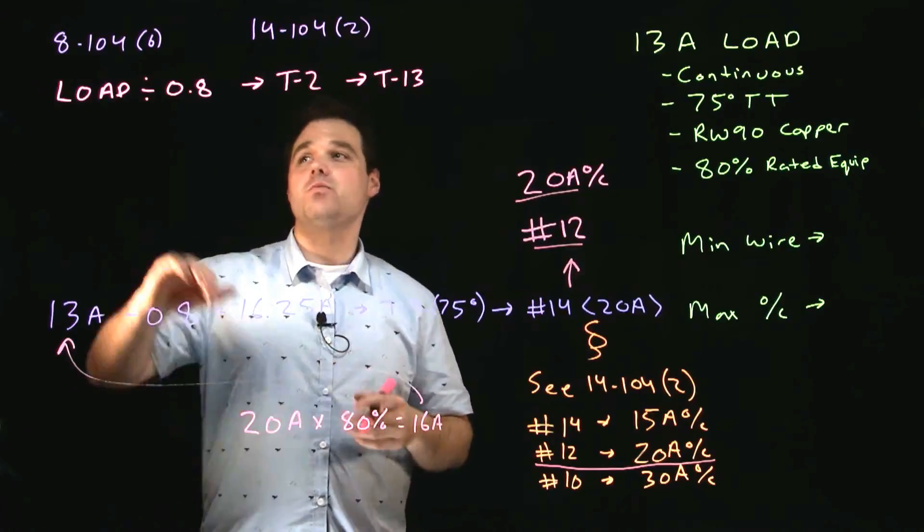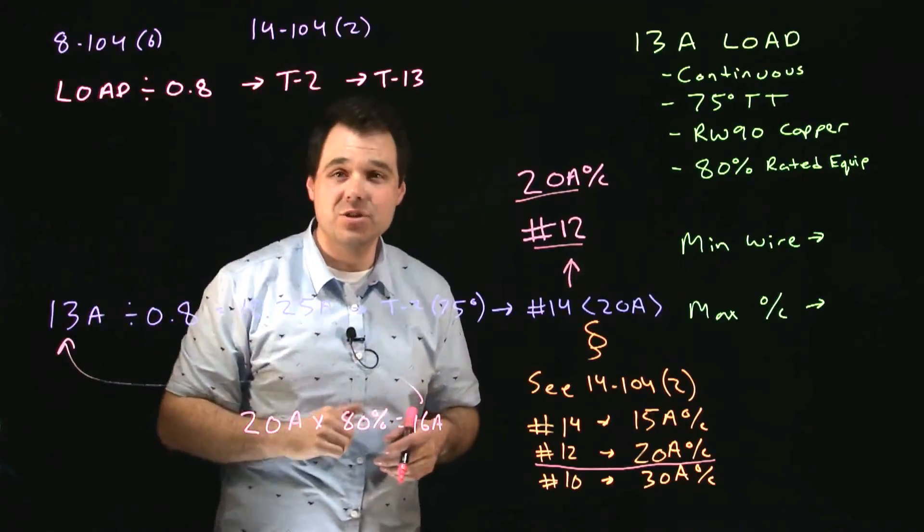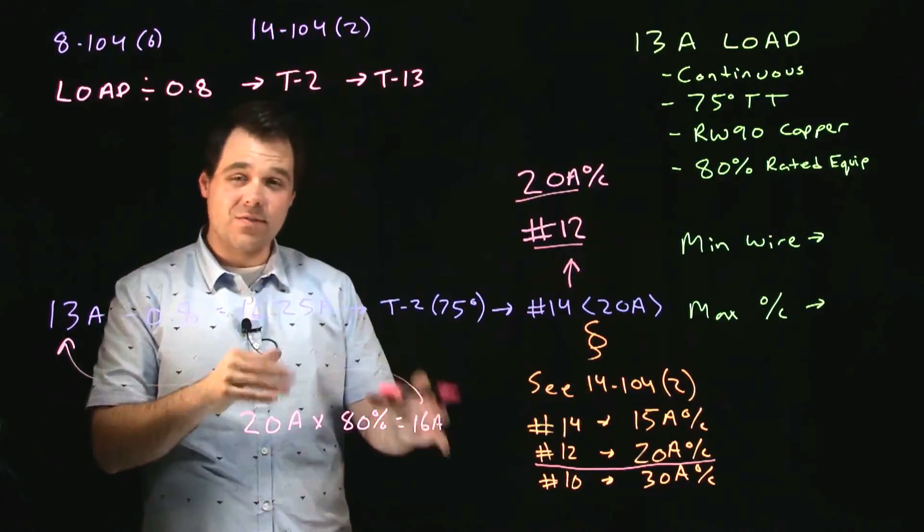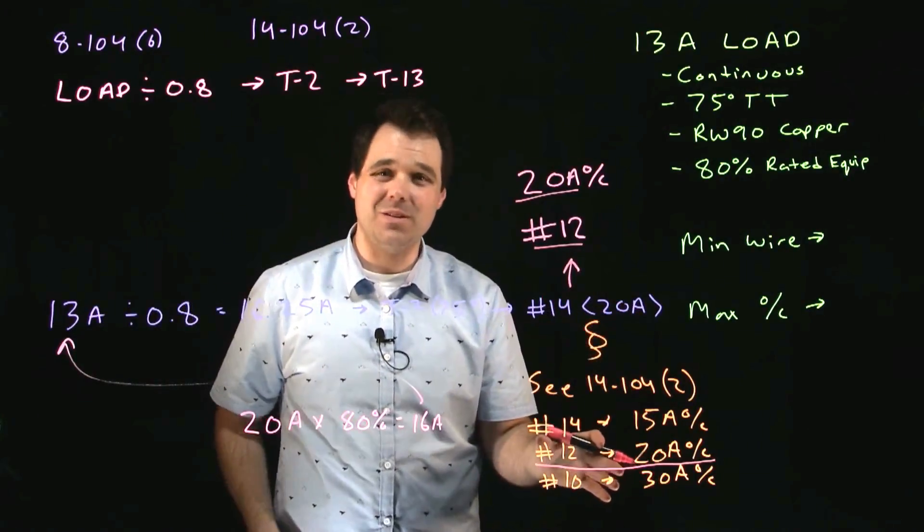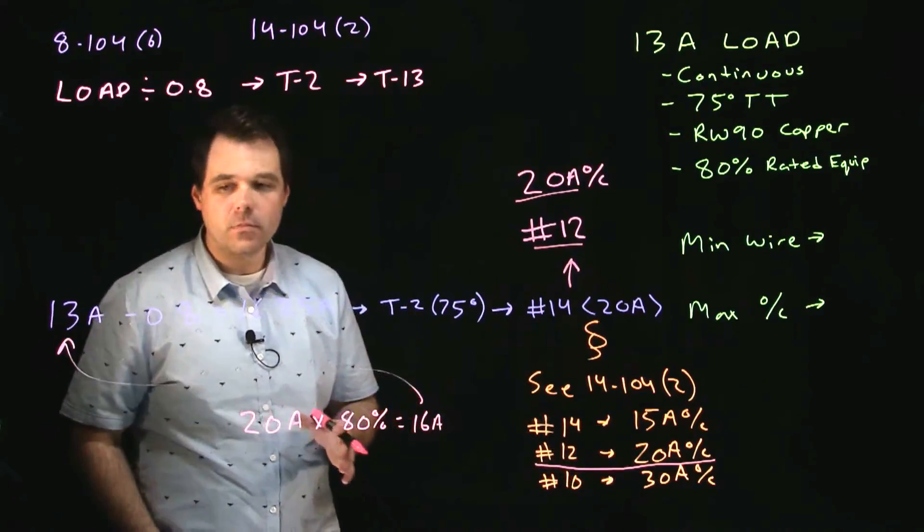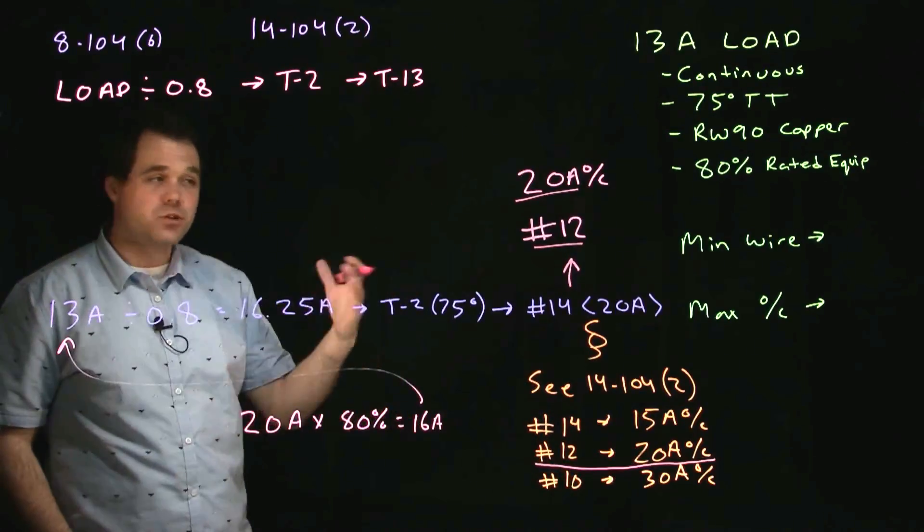So kind of two little tricks with this one. We did a continuous loading calculation like we normally would. Only at the very end we had the double squiggles. We have to pay attention to 14-104 sub rule 2. So two different steps there. Two different processes.